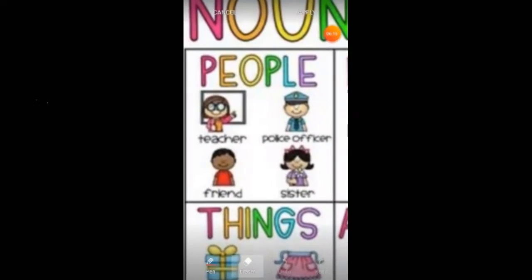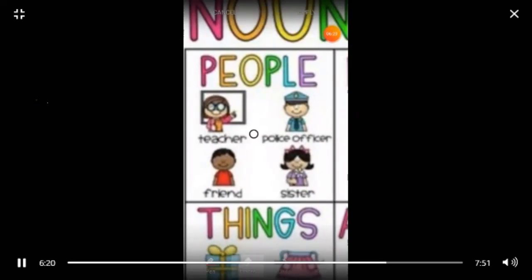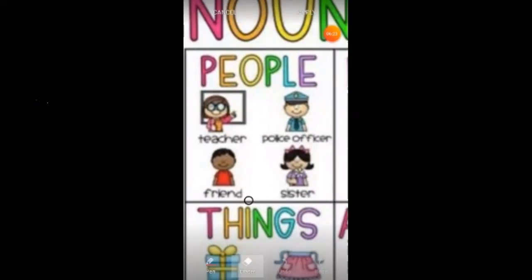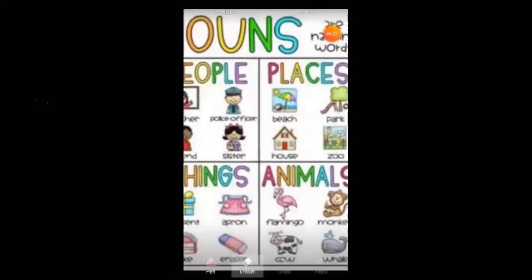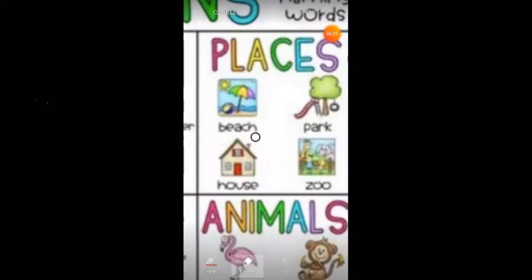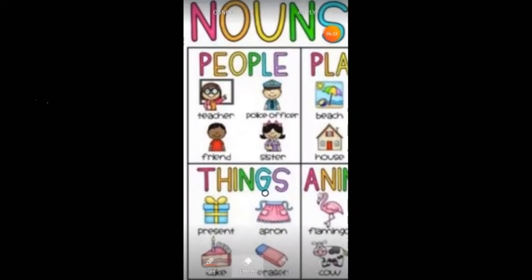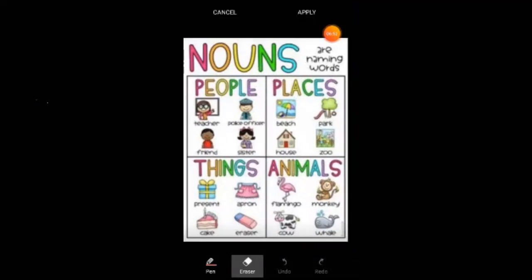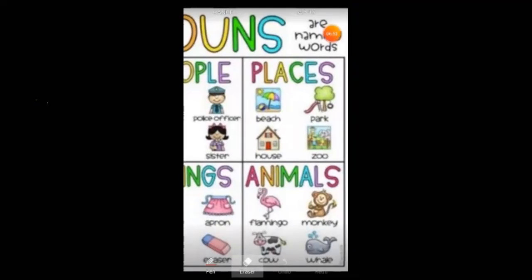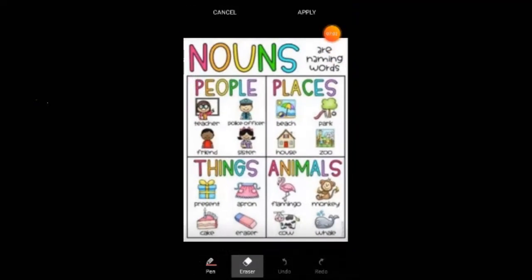Let's see the pictures here. In people, we have teacher, police officer, friend, sister. In places, we have beach, park, house, zoo, room. In things, we have present, apron, cake, and eraser. And in animals, we have flamingo, monkey, cow, and a whale. All these are naming words.